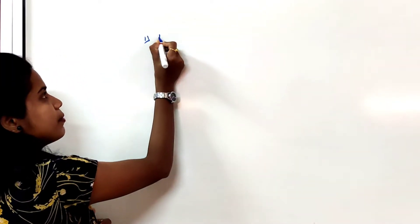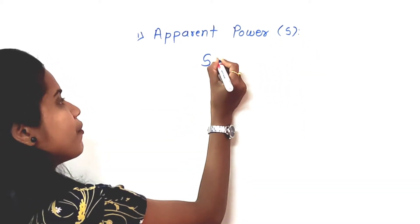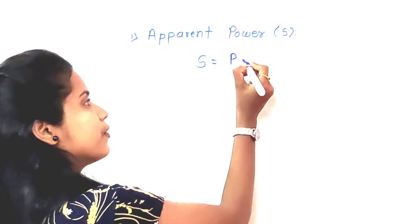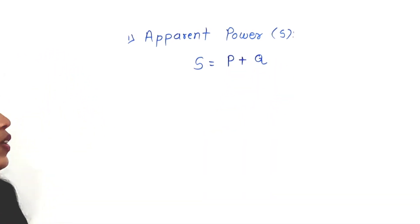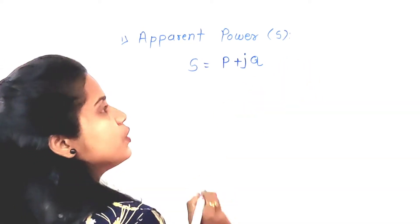The next important topic is terms related to power. Power is the product of voltage and current. There are three types of power: apparent power, active power, and reactive power. Apparent power, denoted by S, is the total power supplied by the circuit. S represents the combination of active power P plus reactive power Q. In rectangular form it is written as P + jQ. Its unit is volt-ampere (VA) or kilo volt-ampere (kVA).